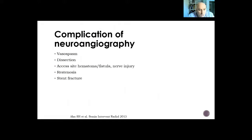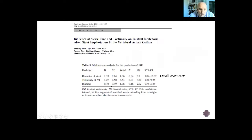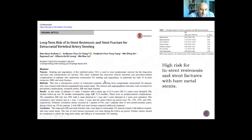We should also know the complications of neuroangiography, which include vasospasm, dissection, access-site hematoma or fistula, nerve injury, in-stent restenosis, and stent fracture. Predictors of in-stent restenosis include small stent diameter, tortuosity of the V1 segment of the vertebral artery, and diabetes. In these patients, in-stent restenosis is more likely to occur.